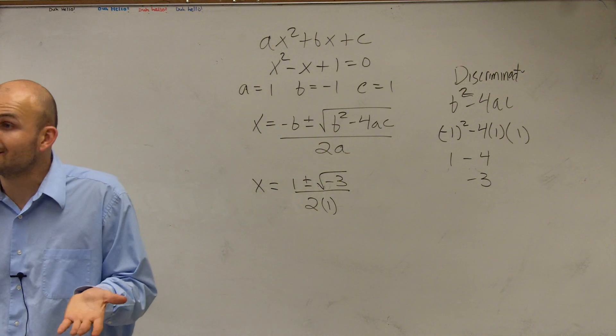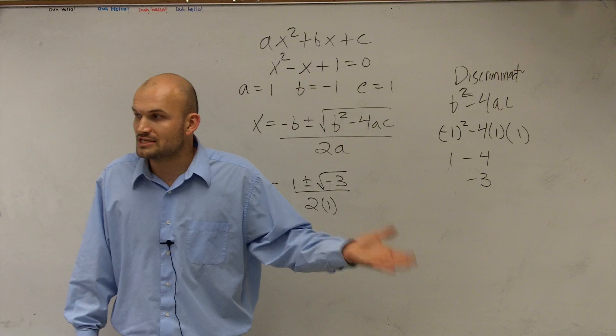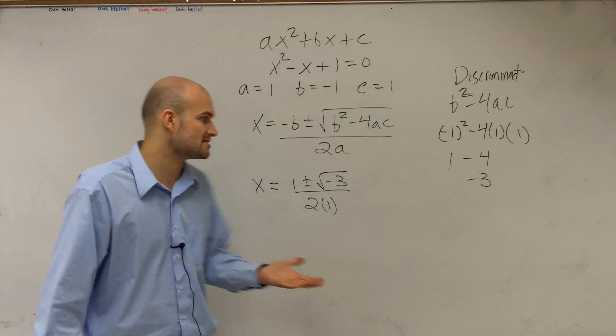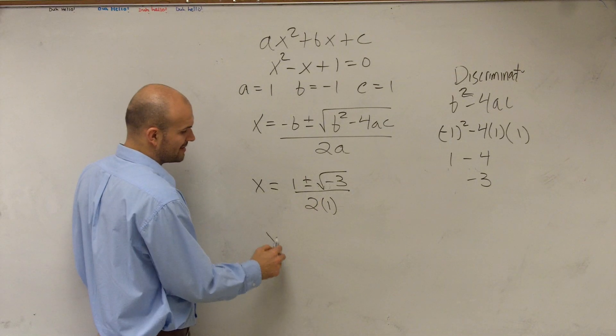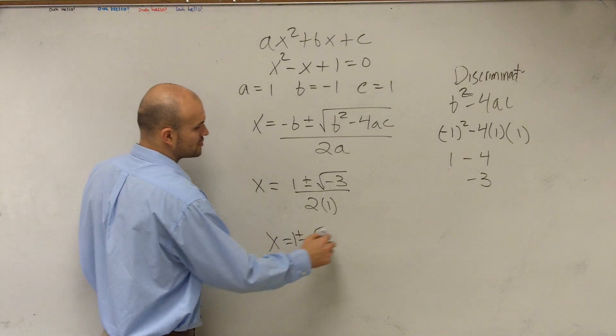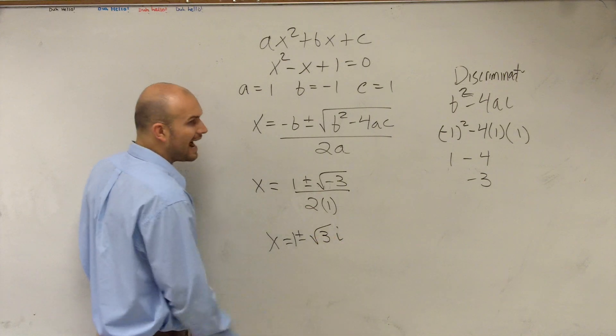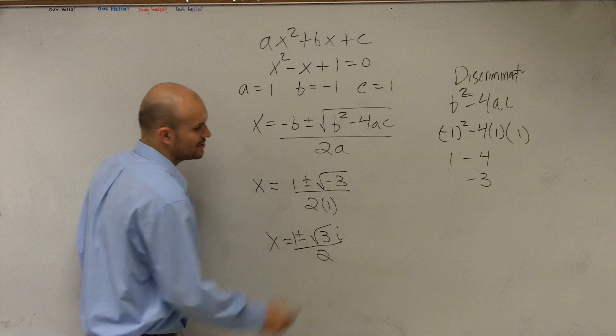Now remember, when we have a square root of a negative number, we can't take the square root of a negative number. That's why we started using the complex number system. So instead of taking the square root of negative 3, I'm going to rewrite this as x equals 1 plus or minus the square root of 3, i. So I'll take the square root of negative 1 out and leave it as i, all divided by 2.